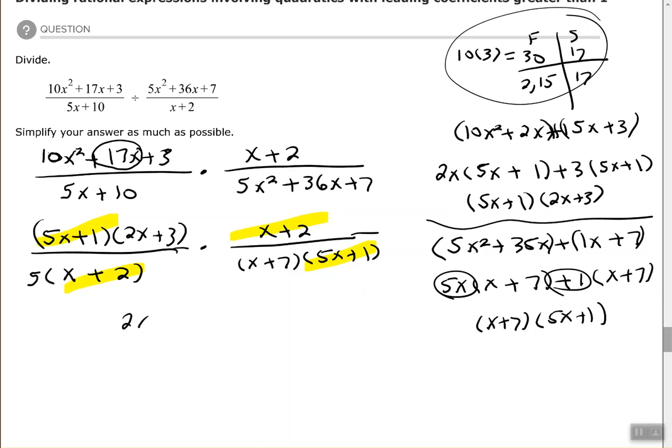So 2x + 3—we don't need parentheses because we don't have any other factors in the numerator—all over 5(x + 7).